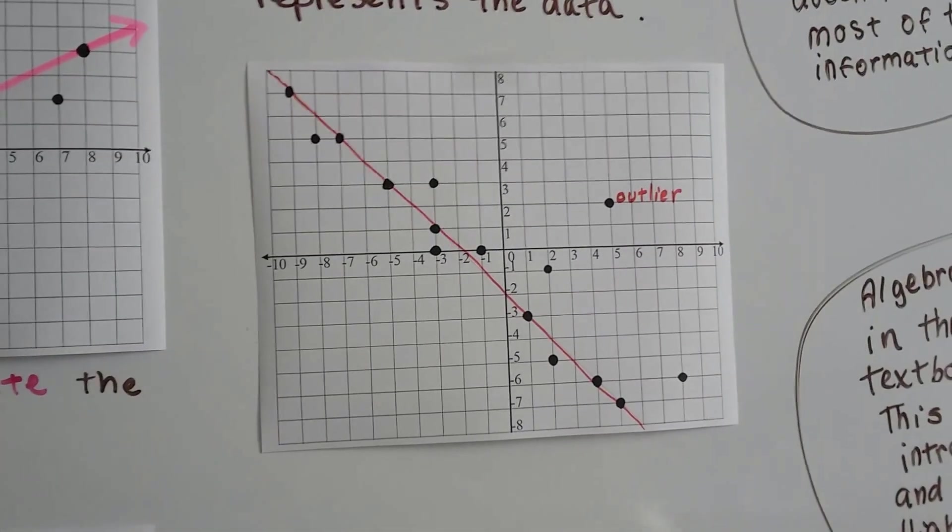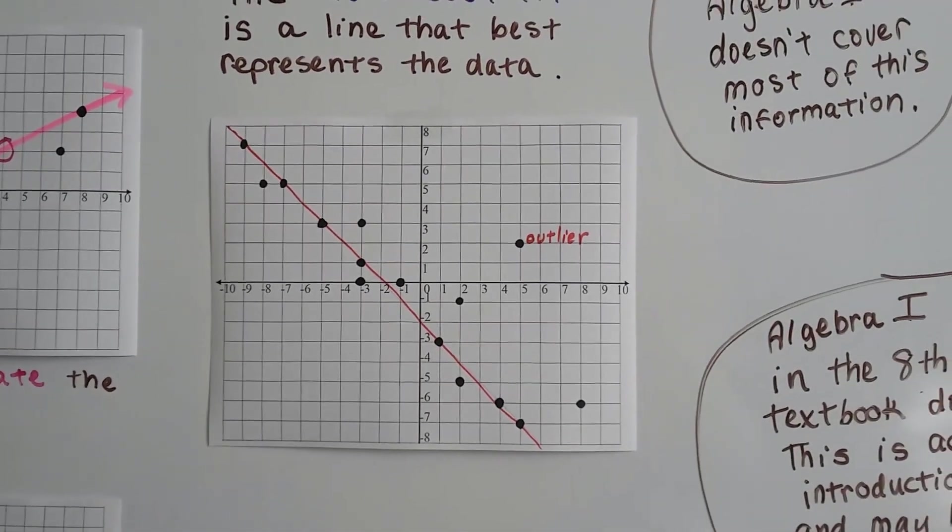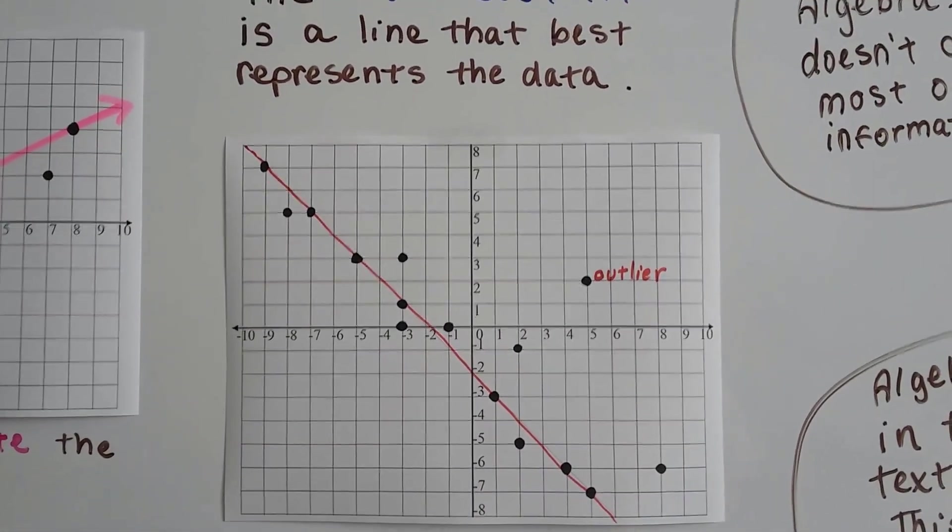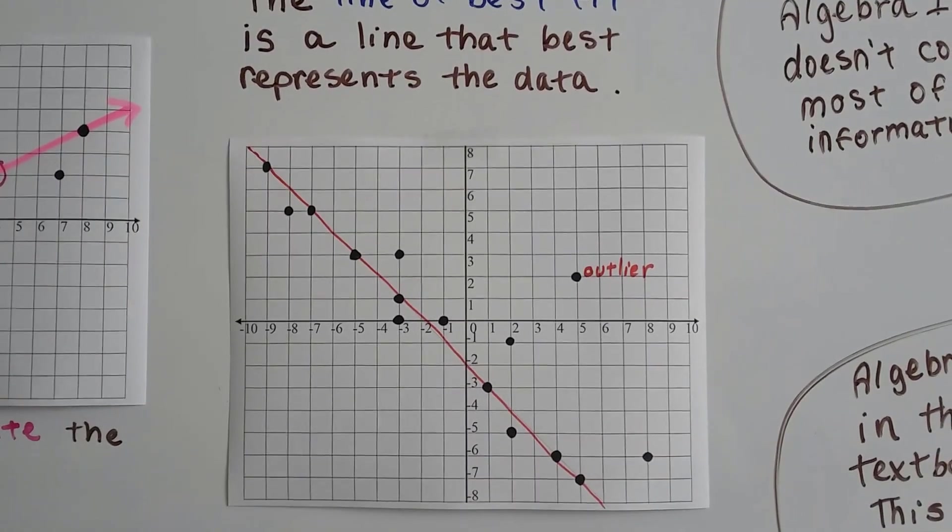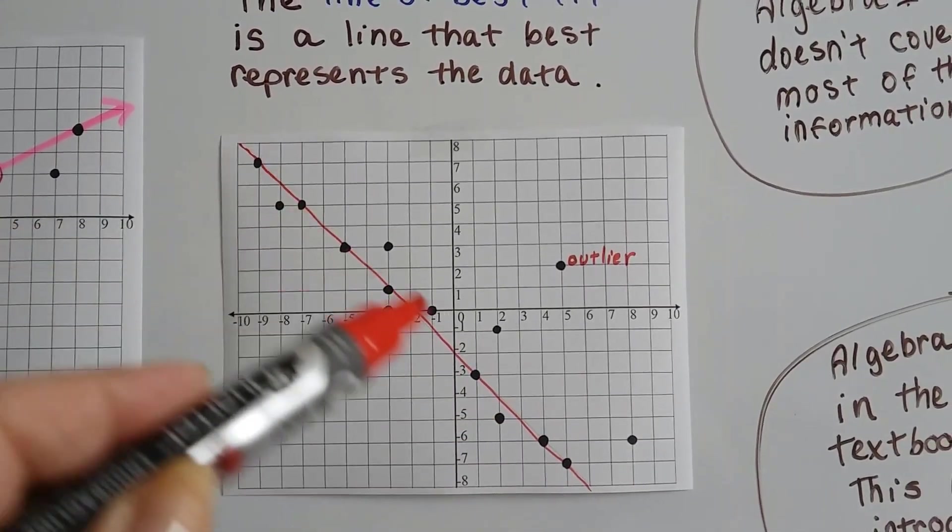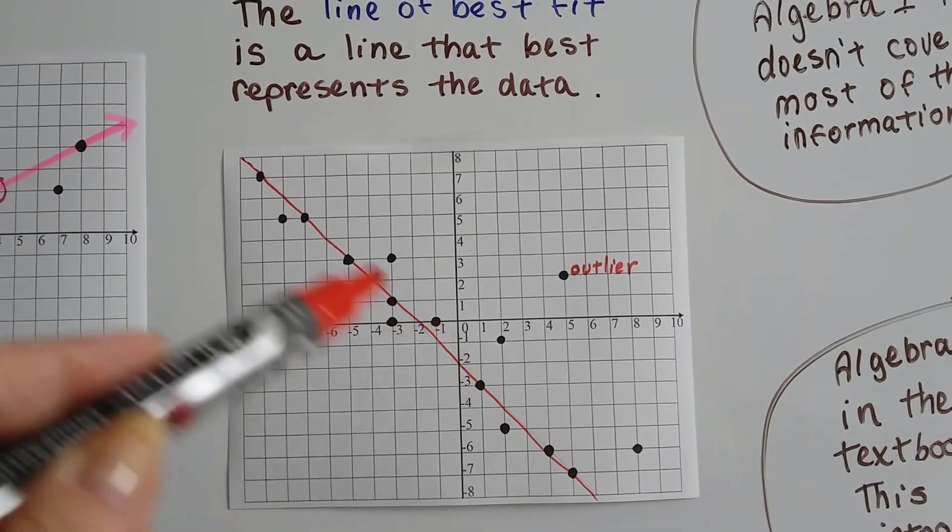So let me show you one really quick over here. Look at this. This is a scatter plot. See how the information is just scattered all over the place? So the line of best fit is a line that best represents the data on the graph. On the plane.